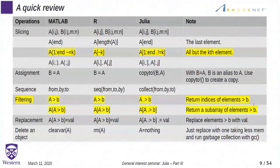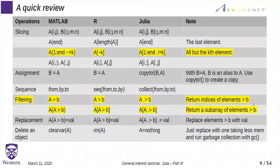What you see here is a quick review of the array operations that Julia supports — a comparison, basically a cheat sheet. Julia supports array operations as MATLAB and other languages such as Fortran, and you can filter out some elements from arrays, and take sub-arrays with very handy operations. For example, if you want to return a sub-array of all elements greater than B, this is how you do it in MATLAB, in R, and in Julia. The difference between MATLAB and R in Julia is you need to put a dot operation in front of the operator.